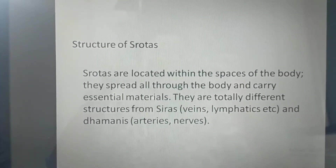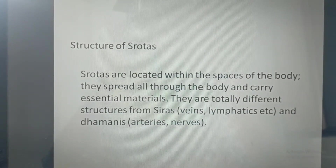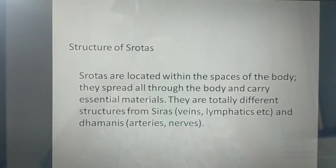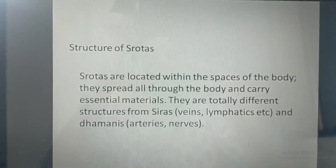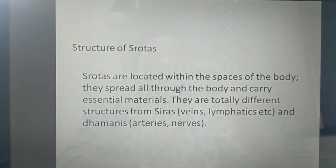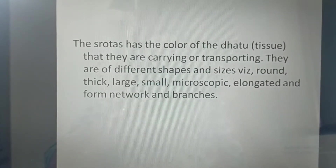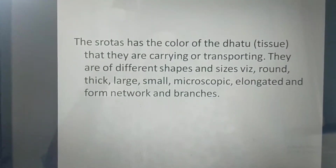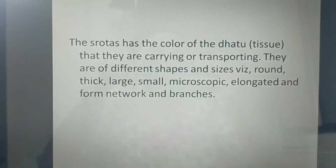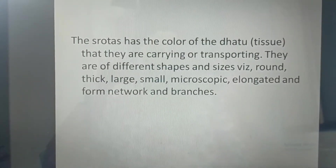The Srotas are located within the spaces of the body. They spread all through the body and carry essential materials. They are totally different structures from Siras. The Srotas has the colour of the Poshak Dhatus that they are carrying and transporting. They are of different shapes and sizes — round, thick, large, small, microscopic, elongated — forming networks and branches.